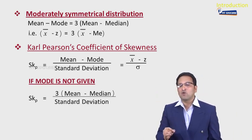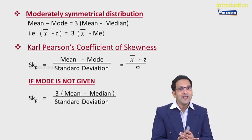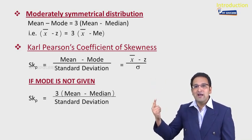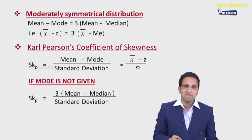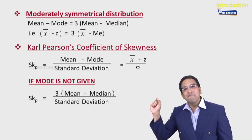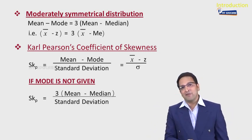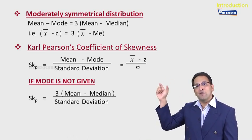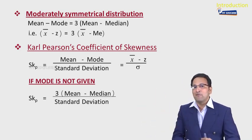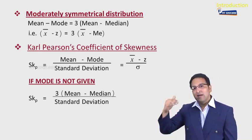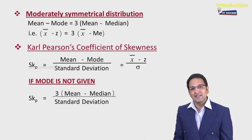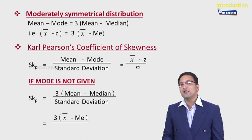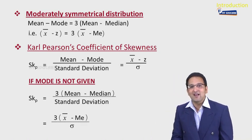Aisa kyun? Kyunki pehle point mein likha hai: mean − mode = 3 × (mean − median). If you compare the two formulae of SKP, the numerator of the first formula is mean − mode, and from the moderately symmetrical formula, mean − mode = 3 × (mean − median). So ultimately, the numerator is the same for both formulae: first formula numerator is mean − mode, and second formula numerator is 3 × (mean − median). On standard deviation, the denominator remains the same: SKP = 3(x̄ − median) / σ.